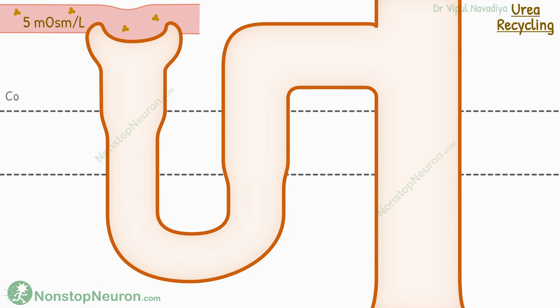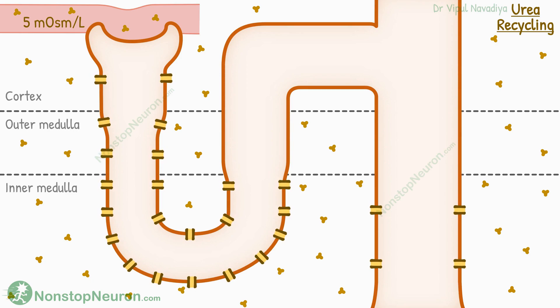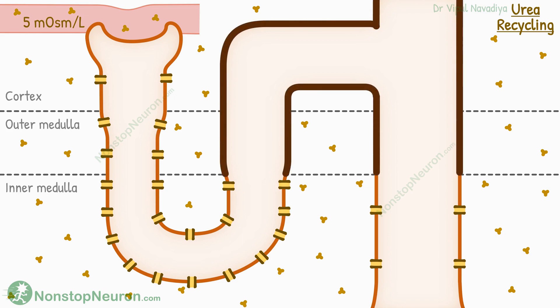In this diagram, the upper part is the cortex. In the middle, we have the outer medulla. And the bottom-most part is the inner medulla. We will assume that in the beginning, the concentration of urea everywhere is the same as in plasma. Now, these are various urea transporters located in different parts of the nephron. Please note that from the thick ascending limb to the outer medullary collecting duct, there are no urea transporters. So this part is impermeable to urea.